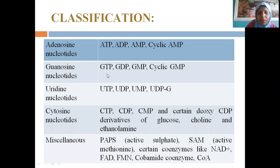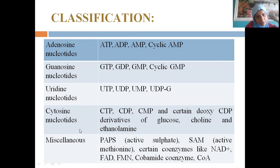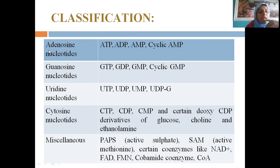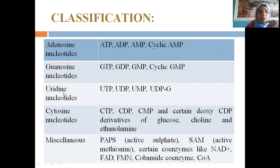For purine nucleotides, the suffix '-osine' is used, as in adenosine; for pyrimidines, the suffix '-idine' is used. Now, adenosine-containing nucleotides are involved in many metabolic reactions. Many synthetic reactions require ATP — for example, the arginosuccinate synthase reaction in the urea cycle. ATP is also involved in muscle contraction, phosphocreatine, active methionine, and methylation reactions.